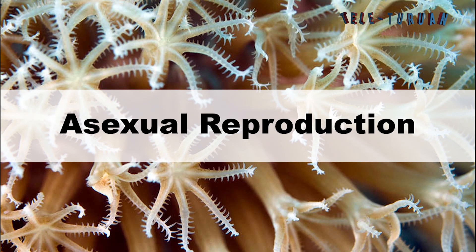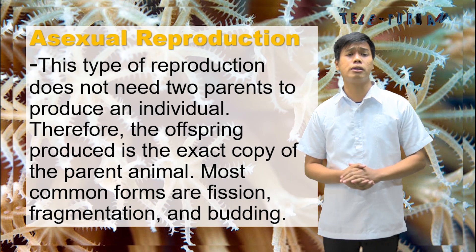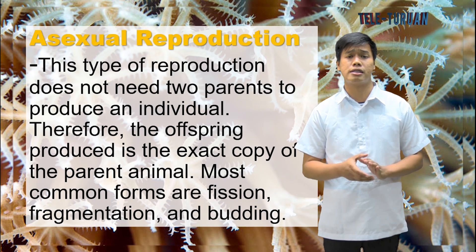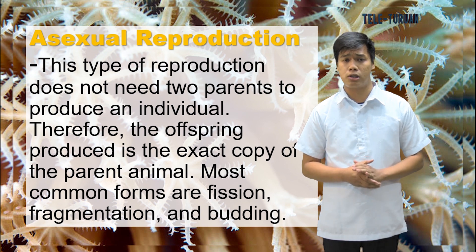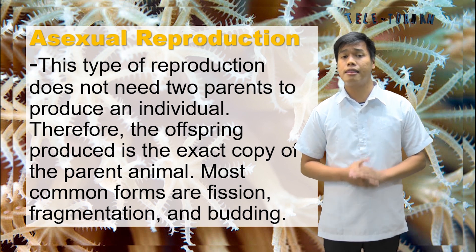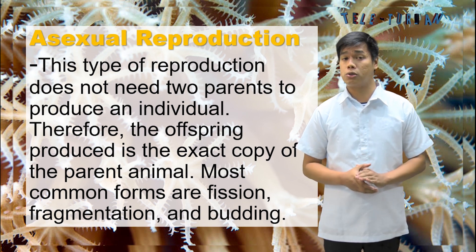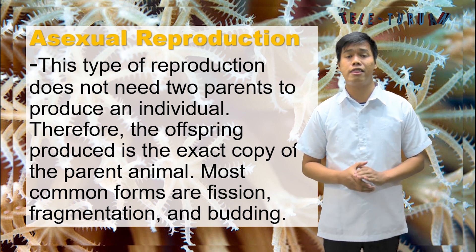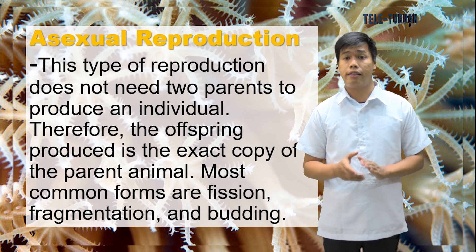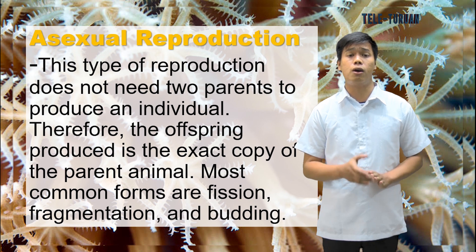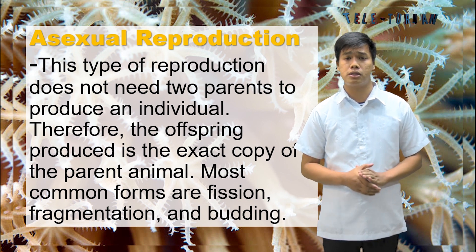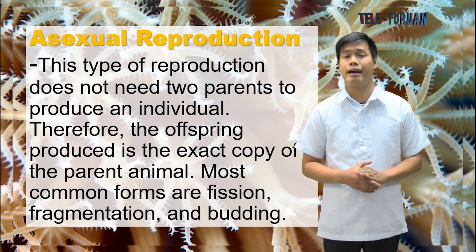Let us go deeper describing asexual reproduction. Asexual reproduction is a type of reproduction that does not need two parents to reproduce an individual. Therefore, the offspring produced is an exact copy of the parent animal.